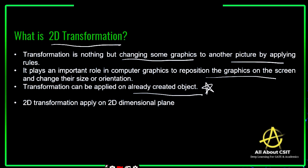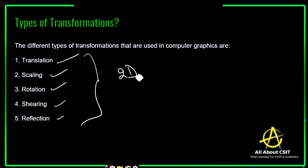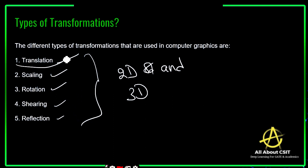One important thing: transformation can be applied only on an already created, already existing object. If the object is there, then you can apply the filters. Without capturing the picture, how can you apply filters — to what are you going to apply them? So in the same way, a transformation can be applied only to the already created object. The 2D transformation applies on the 2D dimensional plane. The different types of transformations used in computer graphics are: translation, scaling, rotation, shearing, and reflection. These types of transformations can be applied on 2D objects as well as 3D objects.